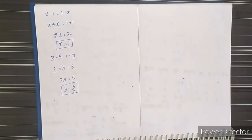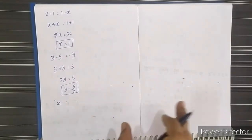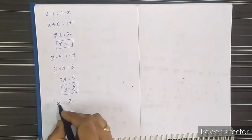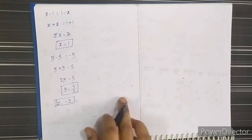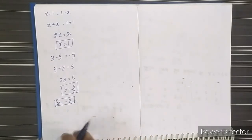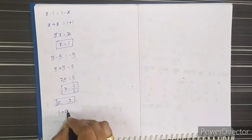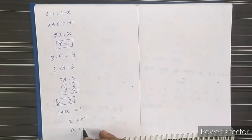Going to the second row, the first element gives z equals 2 directly. The second element gives 0 equals 0, and the third element gives 2 equals 2. Moving to the third row: the third element gives 1 + a equals 1, so a equals 1 - 1, therefore a equals 0.